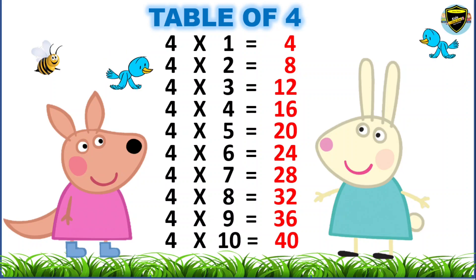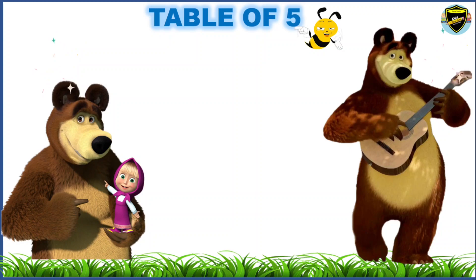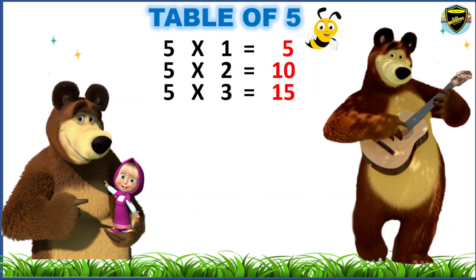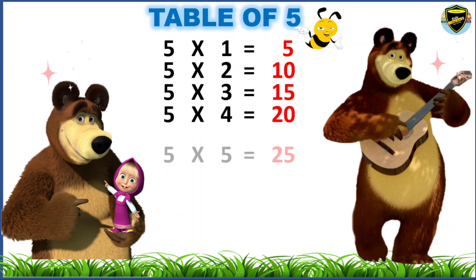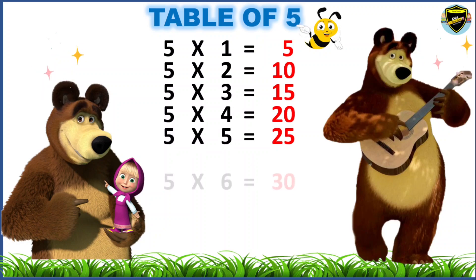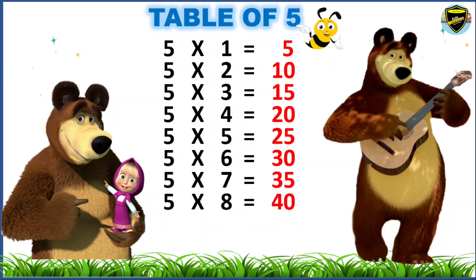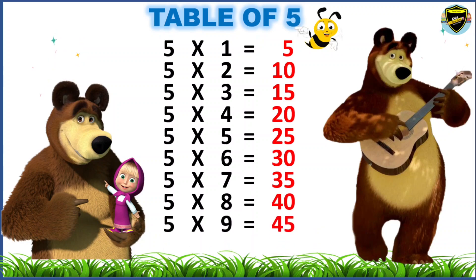Now, let's learn the table of five. Five ones are five. Five twos are ten. Five threes are fifteen. Five fours are twenty. Five fives are twenty-five. Five sixes are thirty. Five sevens are thirty-five. Five eights are forty. Five nines are forty-five. Five tens are fifty.